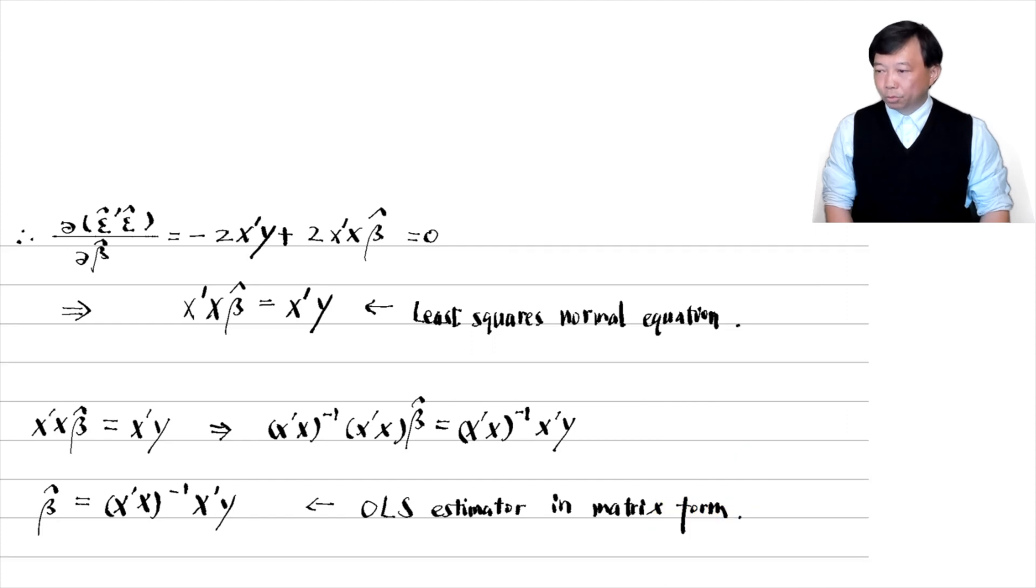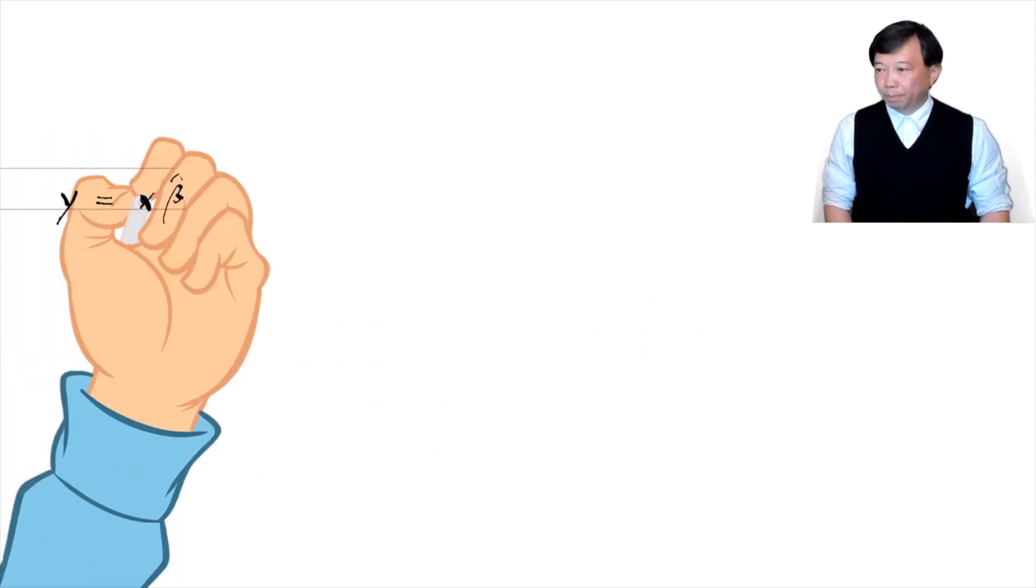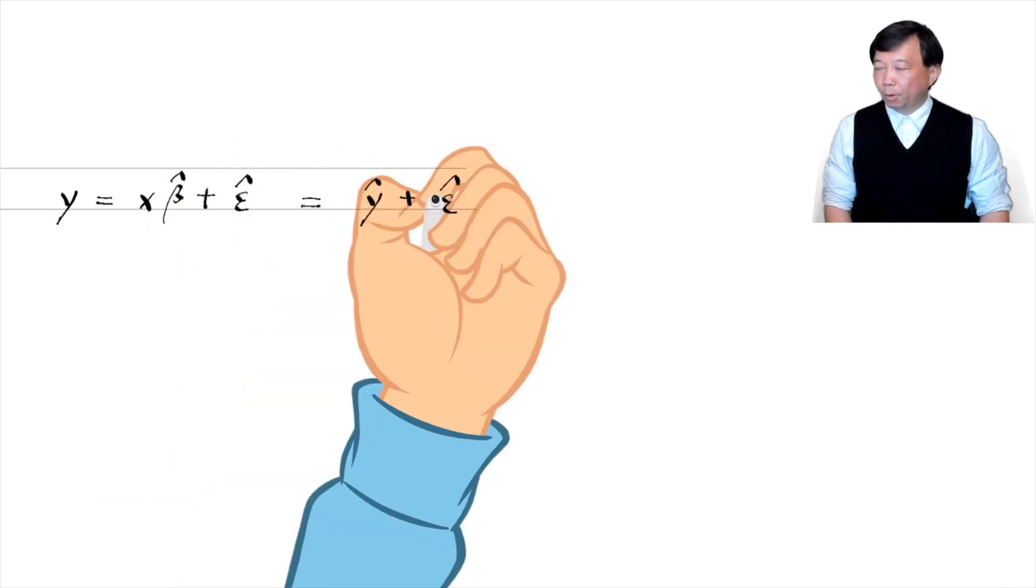The OLS estimator is written in matrix form. Now we return to the regression model. Substitute beta hat with its matrix form solution.